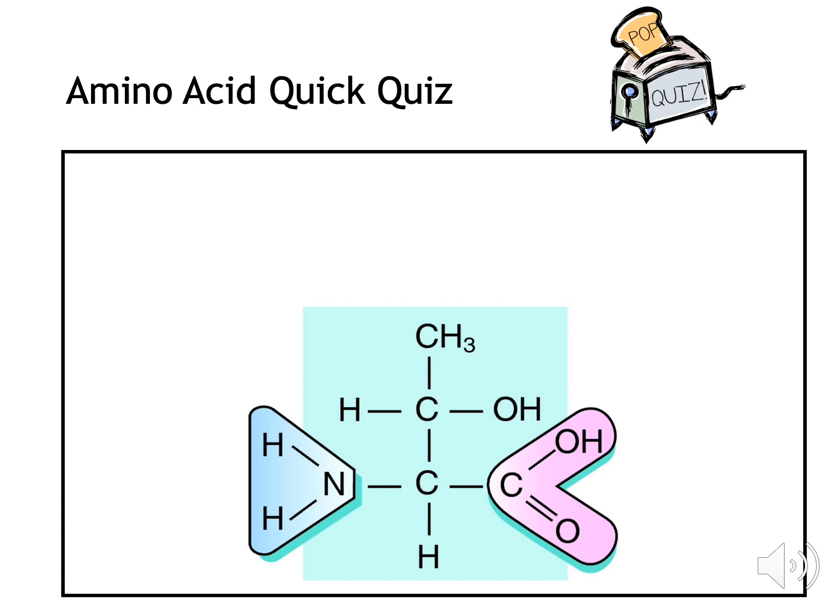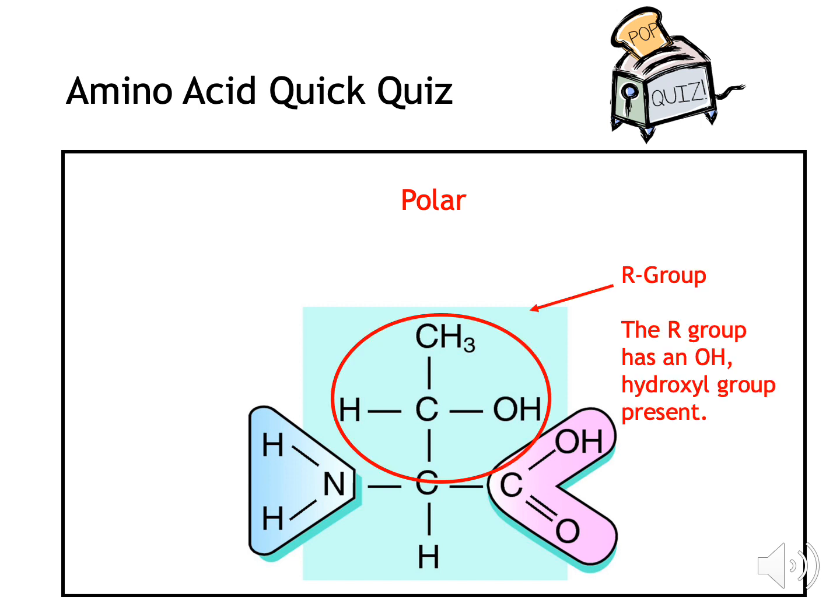Can you identify which type of amino acid this is? Well done if you got it correct — this is a polar amino acid. Even though there are other carbons and hydrogens, the R-group has an OH or hydroxyl group present, so that means it's polar.